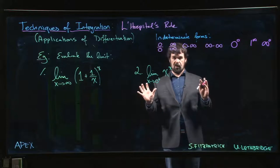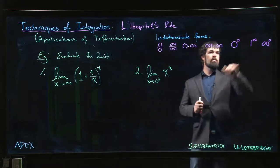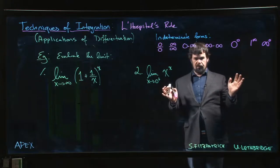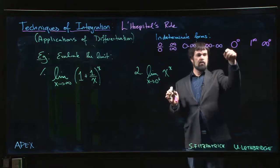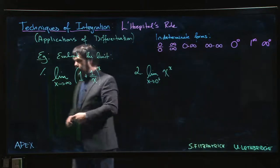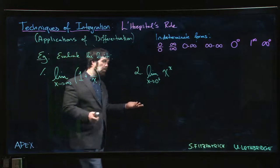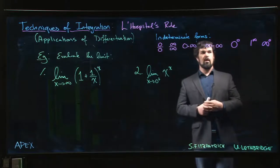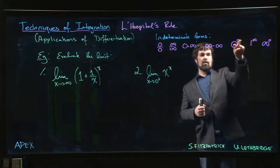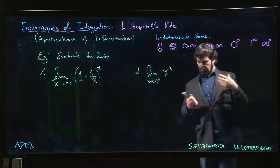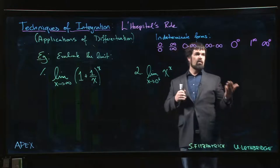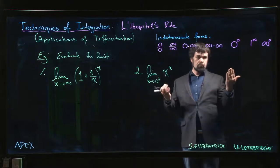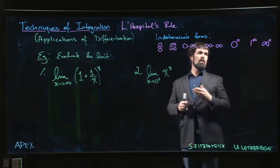These will be our last examples on L'Hôpital's rule. There are three remaining indeterminate forms. The first is zero to the power of zero — it seems harmless, but zero raised to any nonzero power gives zero, while any number raised to the power of zero gives one. So with two functions both approaching zero, there's a conflict: should this limit be zero, or one, or somewhere in between?